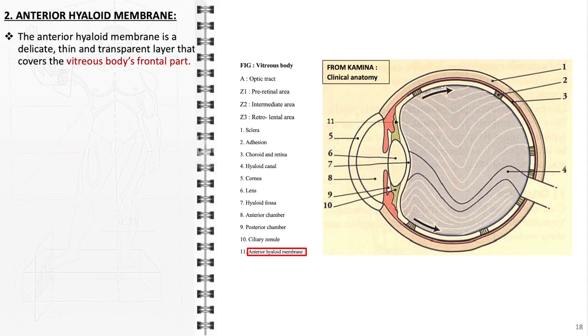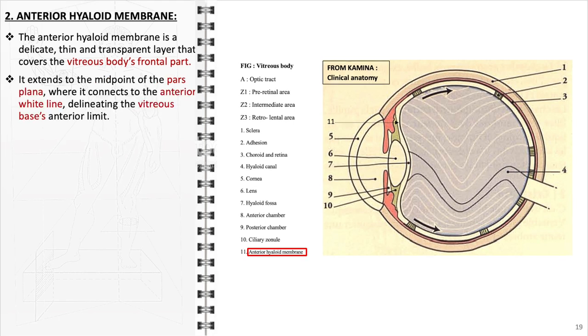Let's examine the various parts of the vitreous. The anterior hyaloid membrane is the foremost layer of the vitreous body, situated just behind the lens and in front of the vitreous gel. Its connection at the midpoint of the pars plana is crucial, marking the transition from the ciliary body to the vitreous base and defining the anterior limit of the vitreous. The transparency of the anterior hyaloid membrane is essential, as it allows light to pass through to the retina without visual distortion.